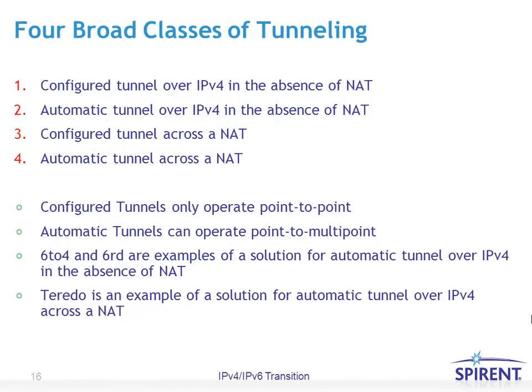With Teredo, there is a concept of NAT — Network Address Translation — that must be taken into effect because NAT is very widespread with IPv4 today and is the only reason IPv4 has lasted this long. There are two types of tunnels — configured and automatic — and then also configured and automatic in the presence or absence of NAT, translating to four different categories. Configured tunnels only operate point-to-point, whereas automatic tunnels can be point-to-multipoint. Examples of automatic tunnels without NAT include 6to4 and more currently 6RD. Teredo is an example of an automatic tunnel over IPv4 across a NAT environment.